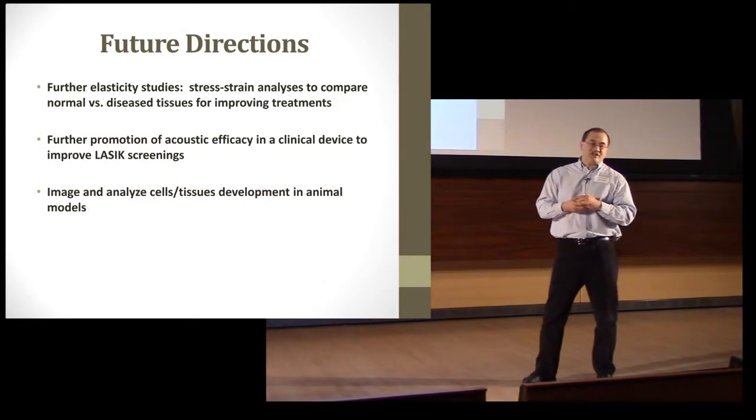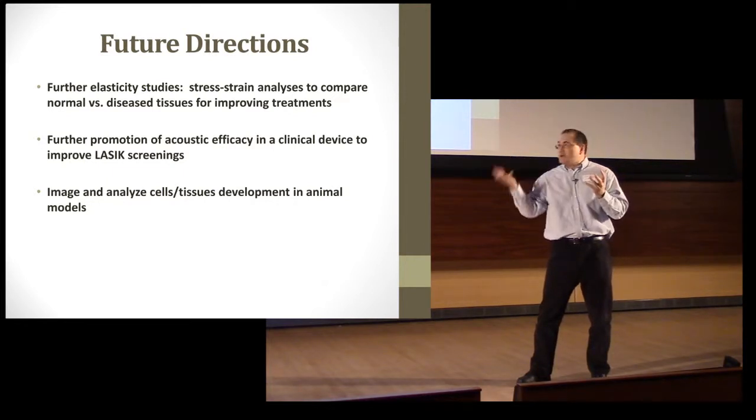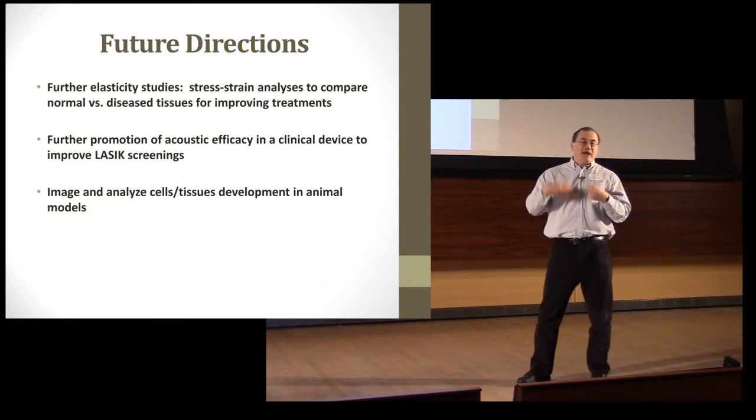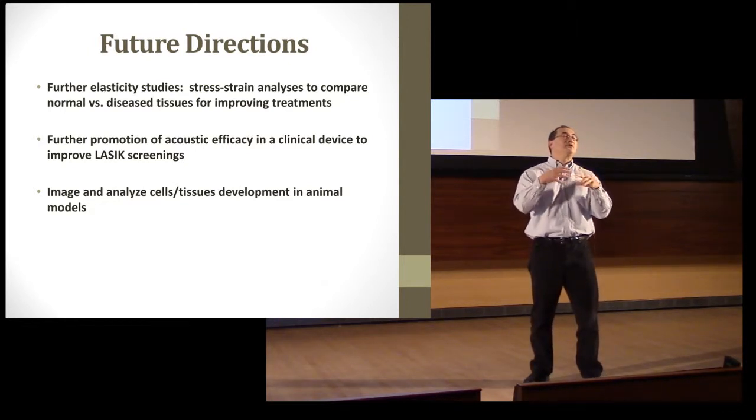Future studies: we want to look at elasticity, stress-strain analyses to better assess disease versus normal tissues, further promote the LASIK screening methods, and then finally image and analyze cells development in animal models. That means we're actually going to be using live specimens to be able to accurately look at the growth and development of cells and better assess disease processes.